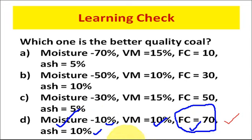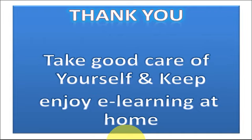Today we have discussed about the proximate analysis, in which we learned the determination of percentage of moisture content, volatile matter content, ash, and fixed carbon content in a given coal sample, along with the significance of all these with respect to the quality of the coal sample. That's all for today's class. Thank you, take good care of yourself and keep enjoying e-learning at home.